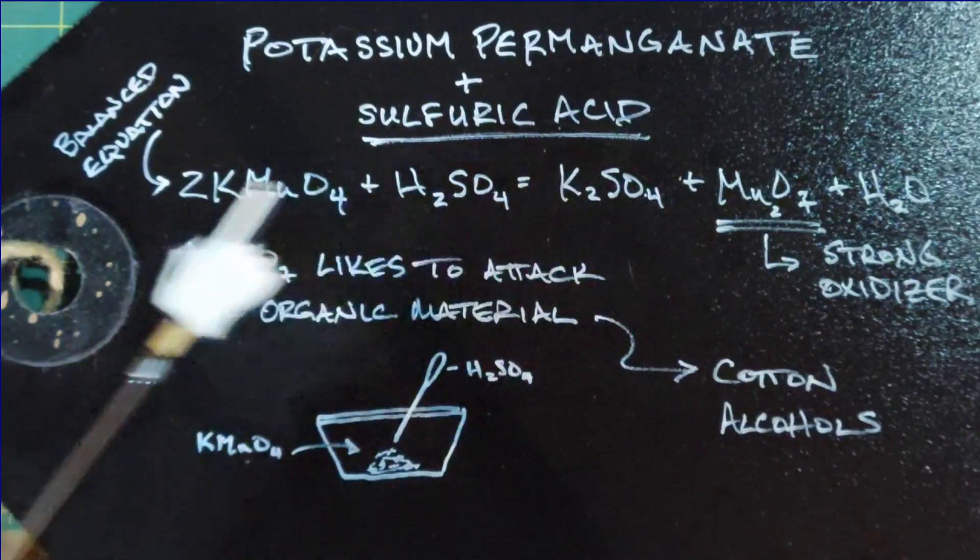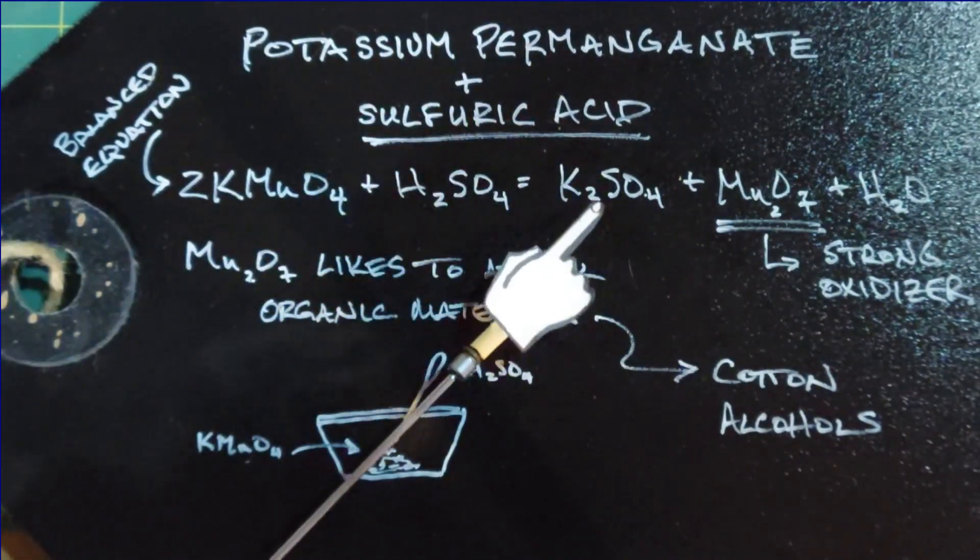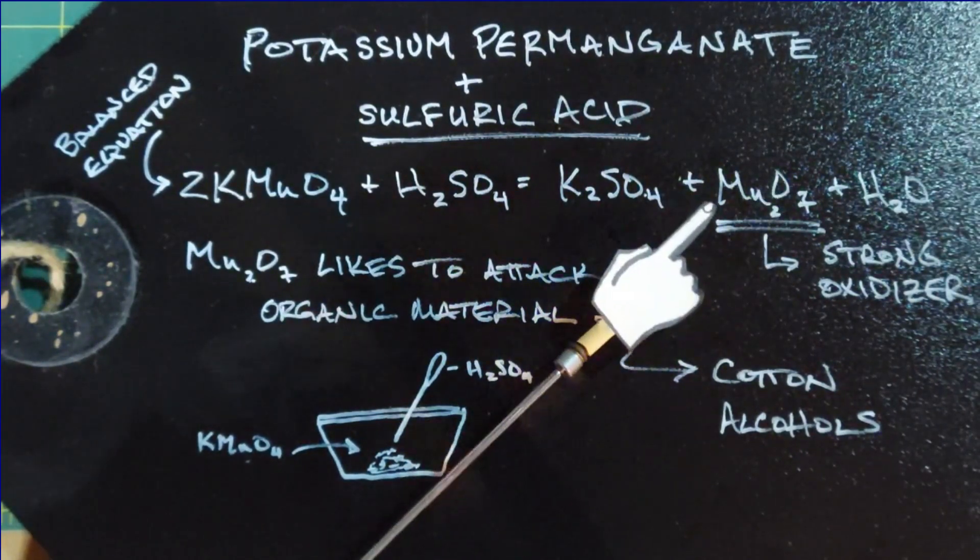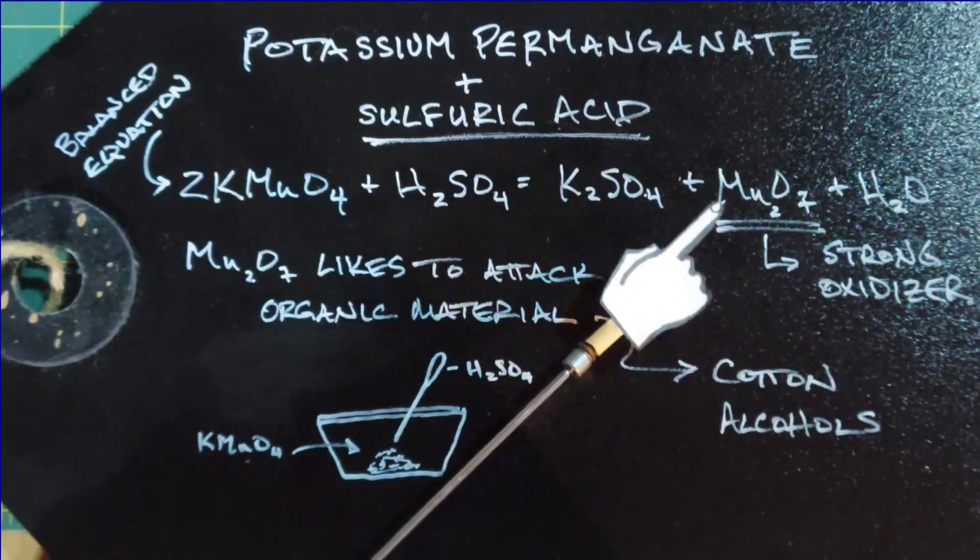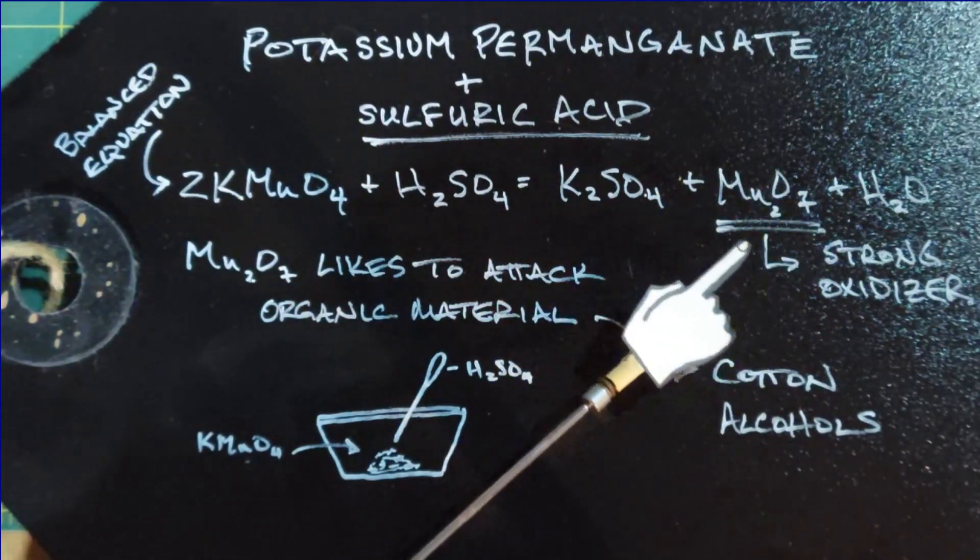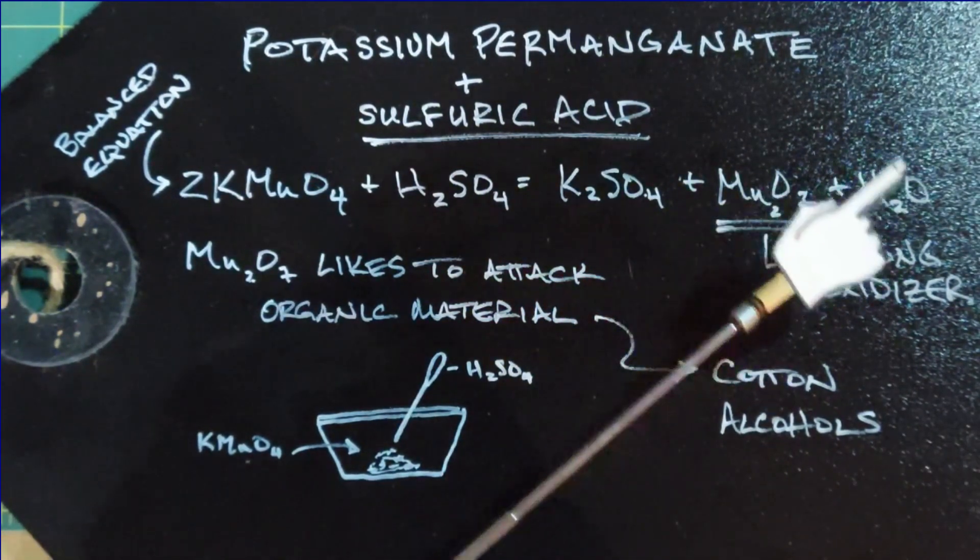And the products when these two are mixed are K2SO4, known as potassium sulfate, Mn2O7, which is known as manganese heptoxide. The seven oxygens is what gives it the heptoxide part of its name, and then water.